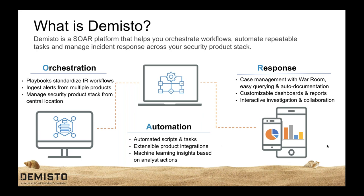The second component, automation, involves finding your repeatable tasks and executing them at machine speed. Demisto has thousands of built-in automation scripts that you can easily customize, and hundreds of product integrations to help accomplish this. The final component, response, involves maintaining oversight of an incident throughout its whole lifecycle. This includes case management via the War Room, where analysts can collaborate and easily query incidents and indicators during investigation. Every action done by the analyst or automated script is auto-documented, making it easy to streamline post-investigation reporting.